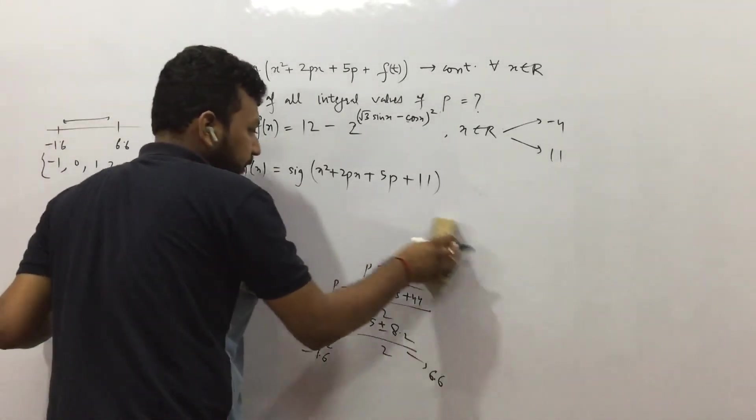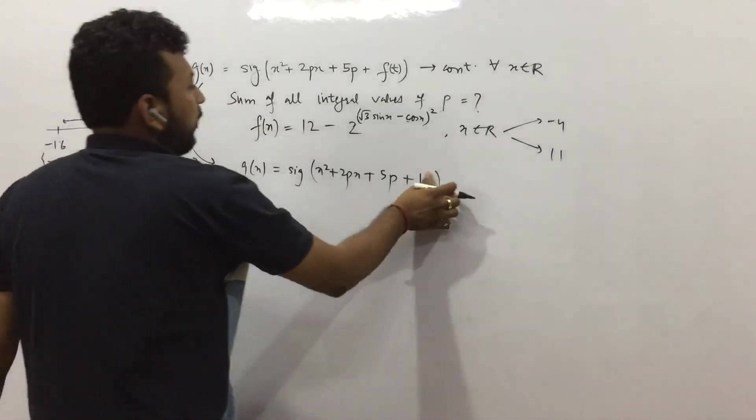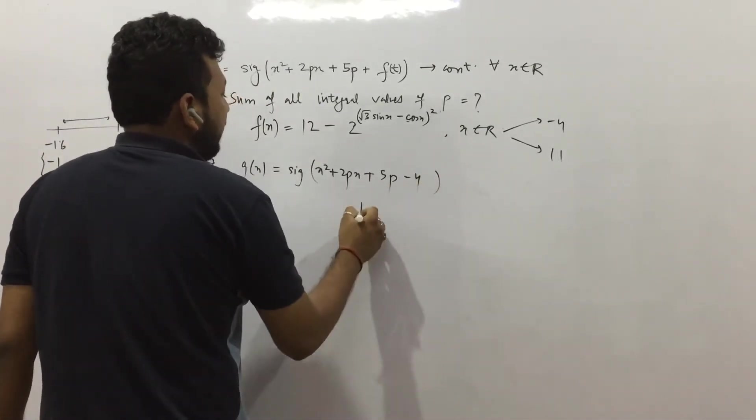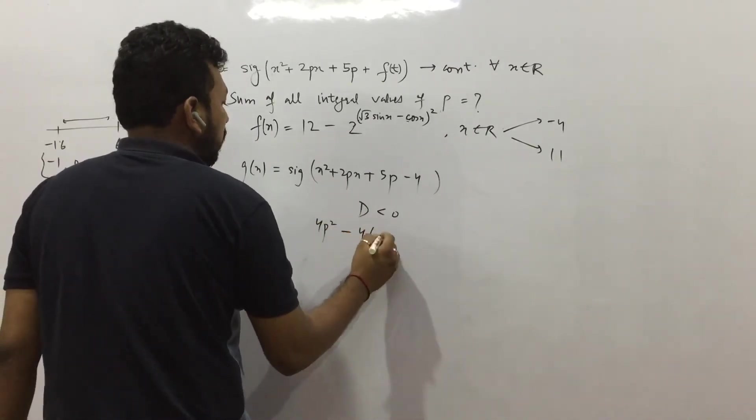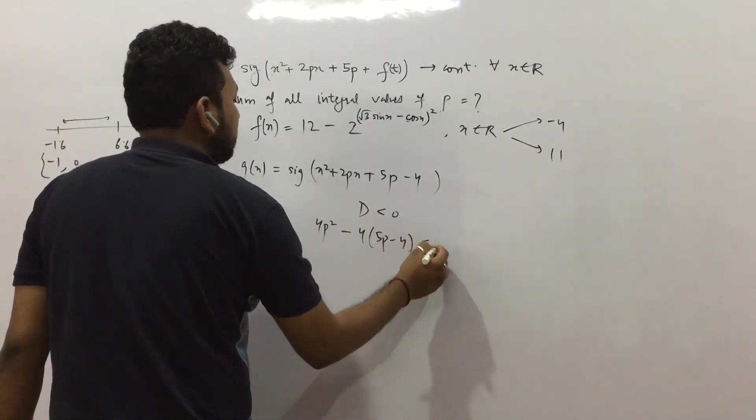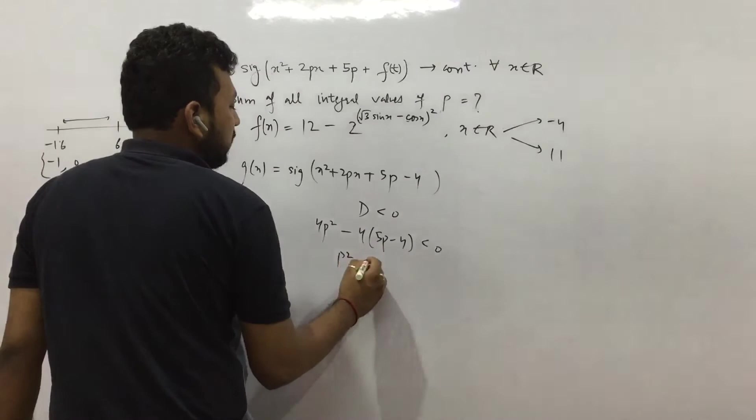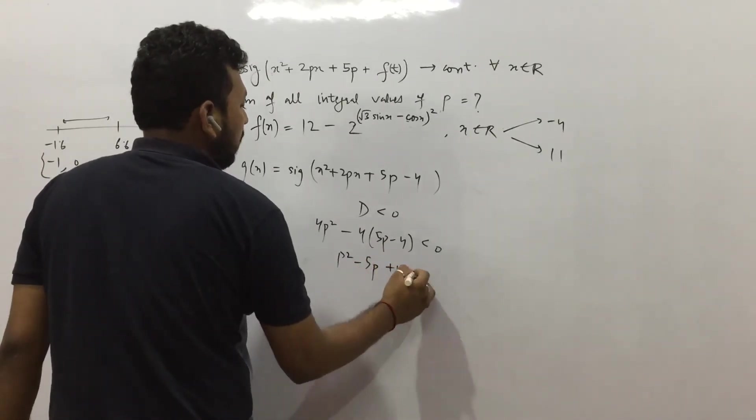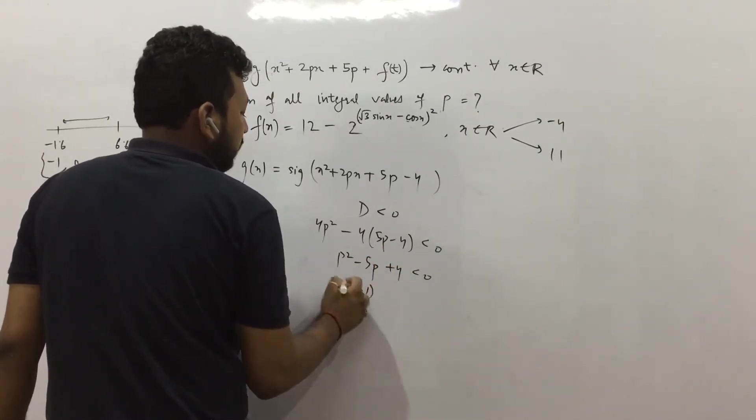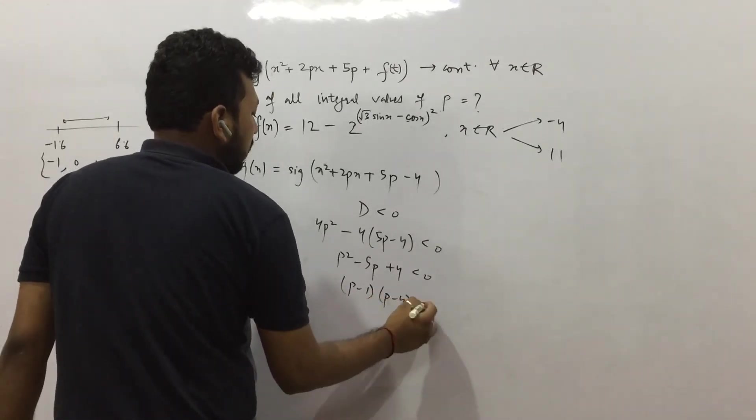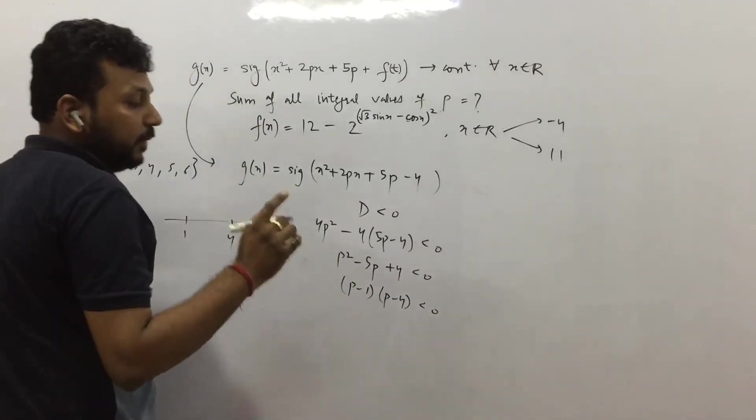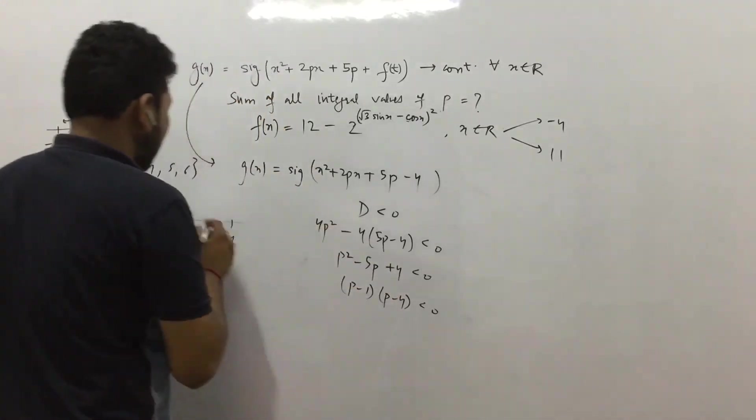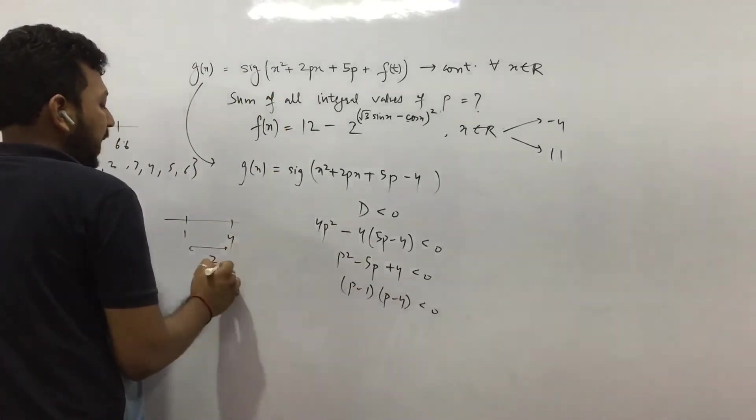Let us see -4. So if we have -4 here, again we do discriminant less than 0. That means p² - 4ac < 0. 4 gets cancelled, so p² - 5p + 4 < 0. (p - 1)(p - 4) < 0. That is p is between 1 and 4. It is between 1 and 4, not even 1 and 4. That means only 2 and 3.